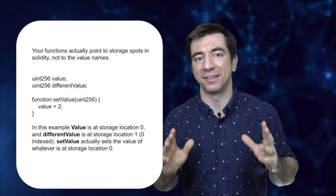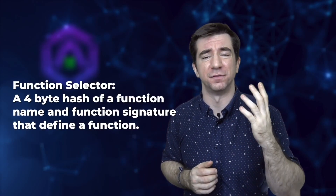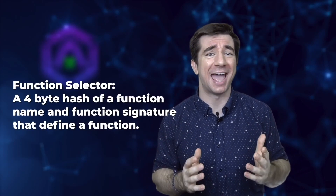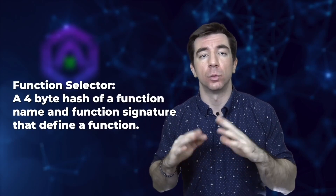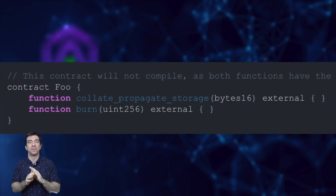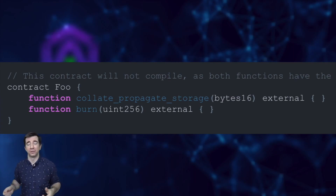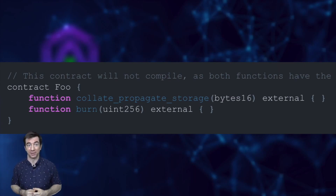The second gotcha is function selector clashes. Proxies use a four-byte hash of the function name and signature — called a function selector — to find a function. It's possible that a function in the implementation contract has the same function selector as an admin function in the proxy contract. Even though two functions are totally different, they can have the same function selector, so something harmless like 'getPrice' could clash with 'upgradeProxy' or 'destroyProxy'.